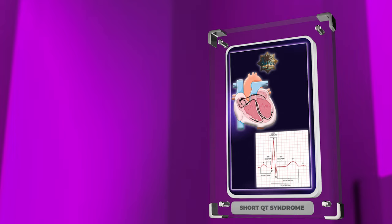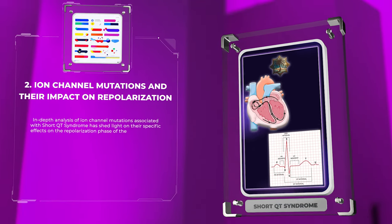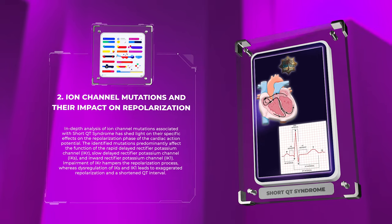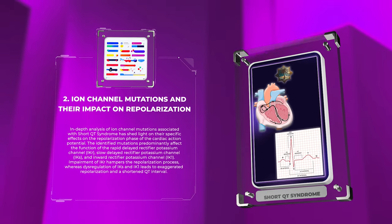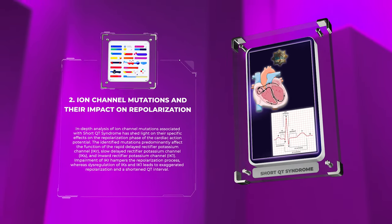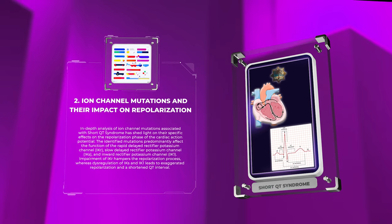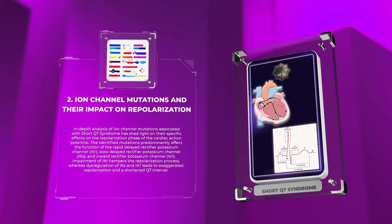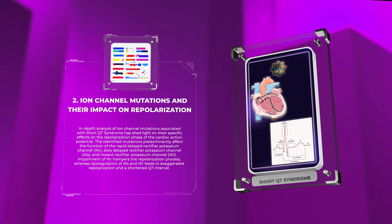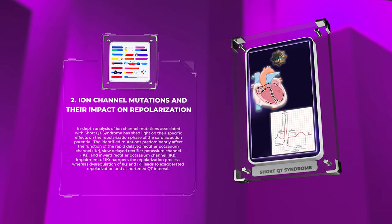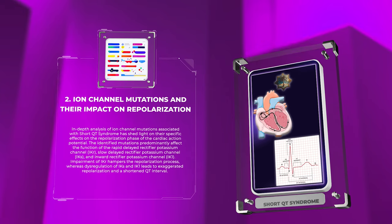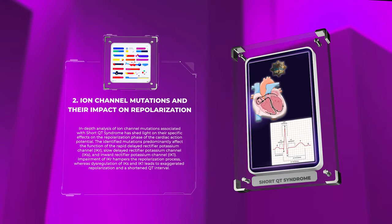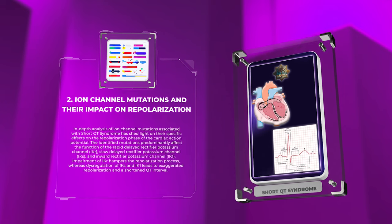In-depth analysis of ion channel mutations associated with Short QT Syndrome has shed light on their specific effects on the repolarization phase of the cardiac action potential. The identified mutations predominantly affect the function of the rapid delayed rectifier potassium channel IKr, the slow delayed rectifier potassium channel IKs, and the inward rectifier potassium channel IK1. Impairment of IKr hampers the repolarization process, whereas dysregulation of IKs and IK1 leads to exaggerated repolarization and a shortened QT interval.